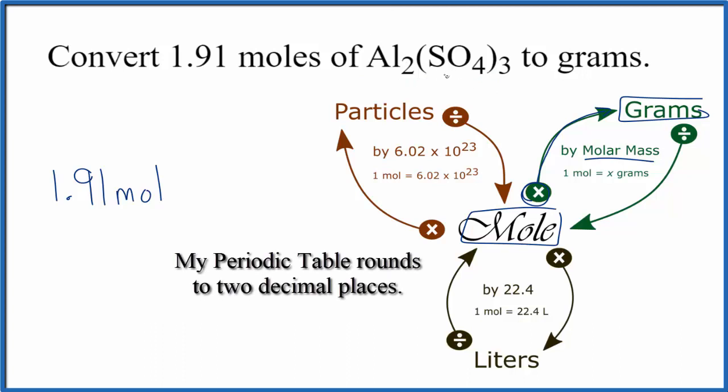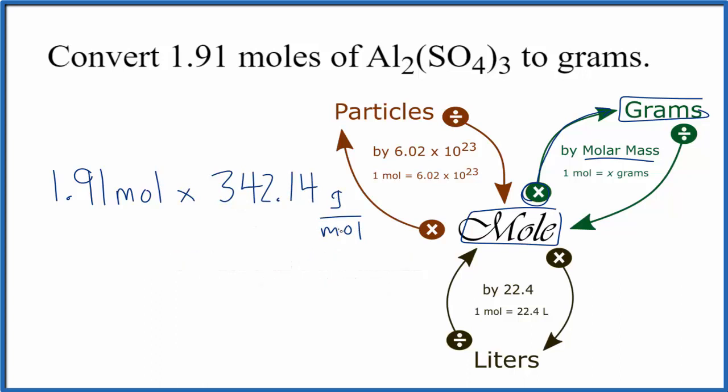When we find the molar mass for aluminum sulfate, we get 342.14 grams per mole. The units are grams per mole for the molar mass.